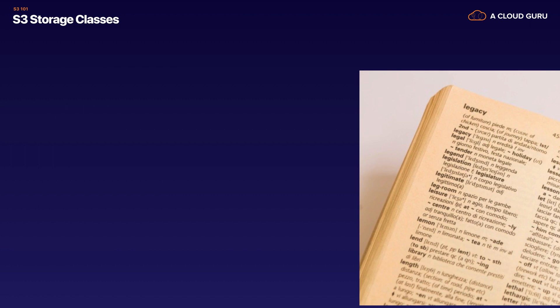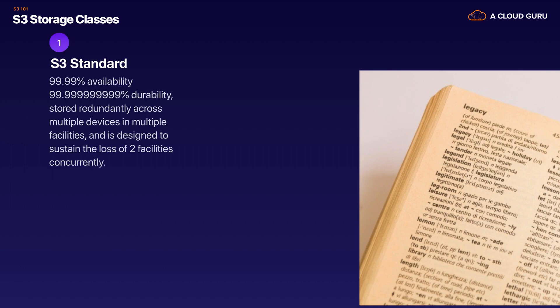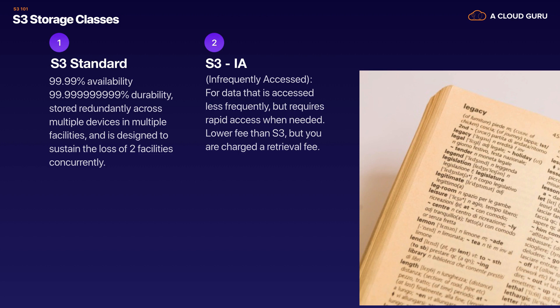Let's cover the storage classes. S3 Standard has 99.99% availability and 11 nines durability. It's stored redundantly across multiple devices in multiple facilities and is designed to sustain the loss of two facilities concurrently — really highly available and highly durable. S3 Infrequently Accessed is for data accessed less frequently but requiring rapid access when needed. You get a lower storage fee than standard S3, but you are charged a retrieval fee.